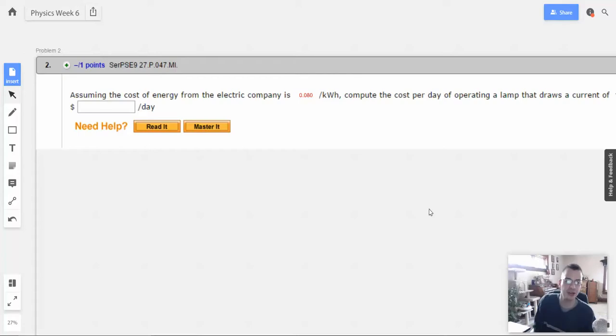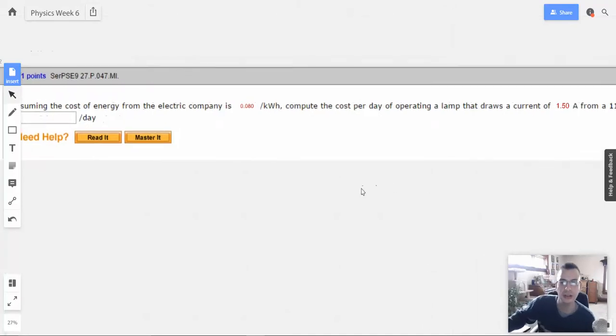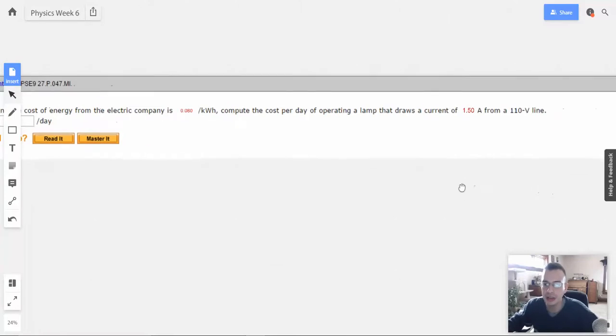Week 6, problem 2. If the cost of energy from the electric company is, I'm going to assume that's 80 cents, 0.08 dollars per kilowatt hour, compute the cost per day of operating a lamp that draws a current of 1.5 amps from a 110 volt line.